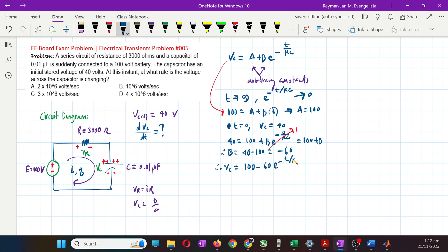Therefore, our Vc at any time is 100 minus 60 e raised to negative t over RC. Now you have Vc as a function of t. Then get the derivative of Vc with respect to t.